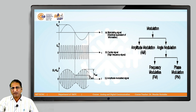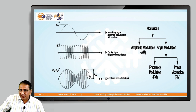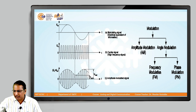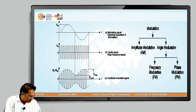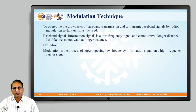Frequency modulation and phase modulation are subtypes of angle modulation because frequency and phase are dependent on each other — they both represent horizontal movement on the x-axis. Whenever frequency changes, phase changes, and whenever phase changes, frequency changes automatically. Now let us see what modulation exactly is.